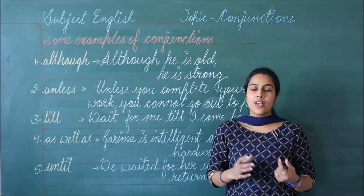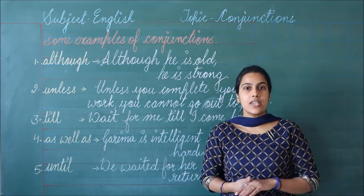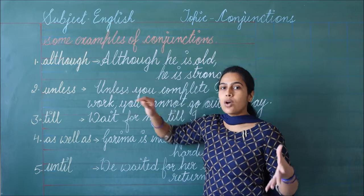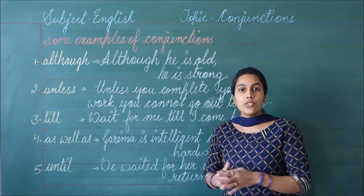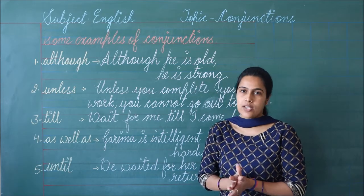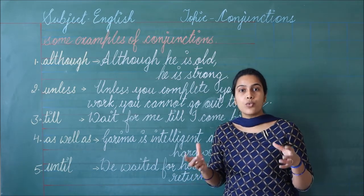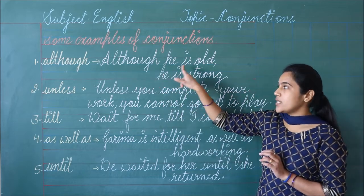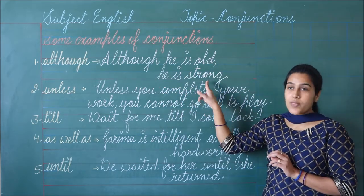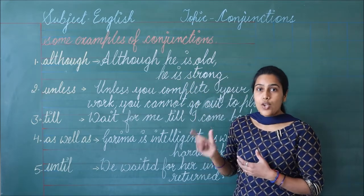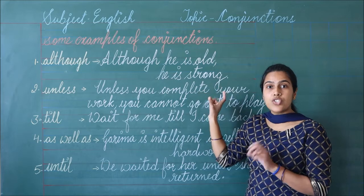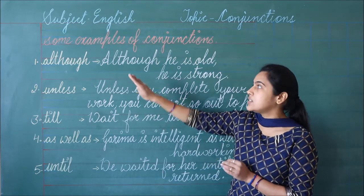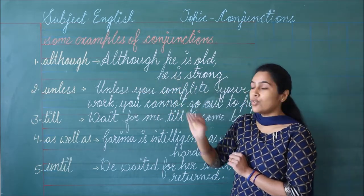Now we shall look at the uses of some of the conjunctions. अब हम कुछ conjunctions के uses के बारे में पढ़ेंगे. The first one is 'although'. Although को हम Hindi में बोलते हैं 'हालाँकि'. Although का use हम तब करते हैं जब हम दो बातों में contrast show करना चाहते हैं — जब हम कोई ऐसी दो बातें बोलते हैं जो एक दूसरे से match नहीं करतीं. Like: Although he is old, he is strong. हालाँकि वो old है, but वो strong भी है — उनकी age और strength एक तरीके से match नहीं करती. Because हम दो opposite बातें बोल रहे हैं, इसलिए हमने यहाँ conjunction 'although' का use किया है.